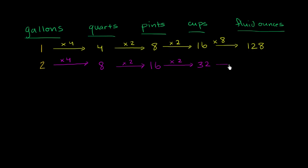And then finally, each cup is eight ounces. 32 times 8 is going to be 256.